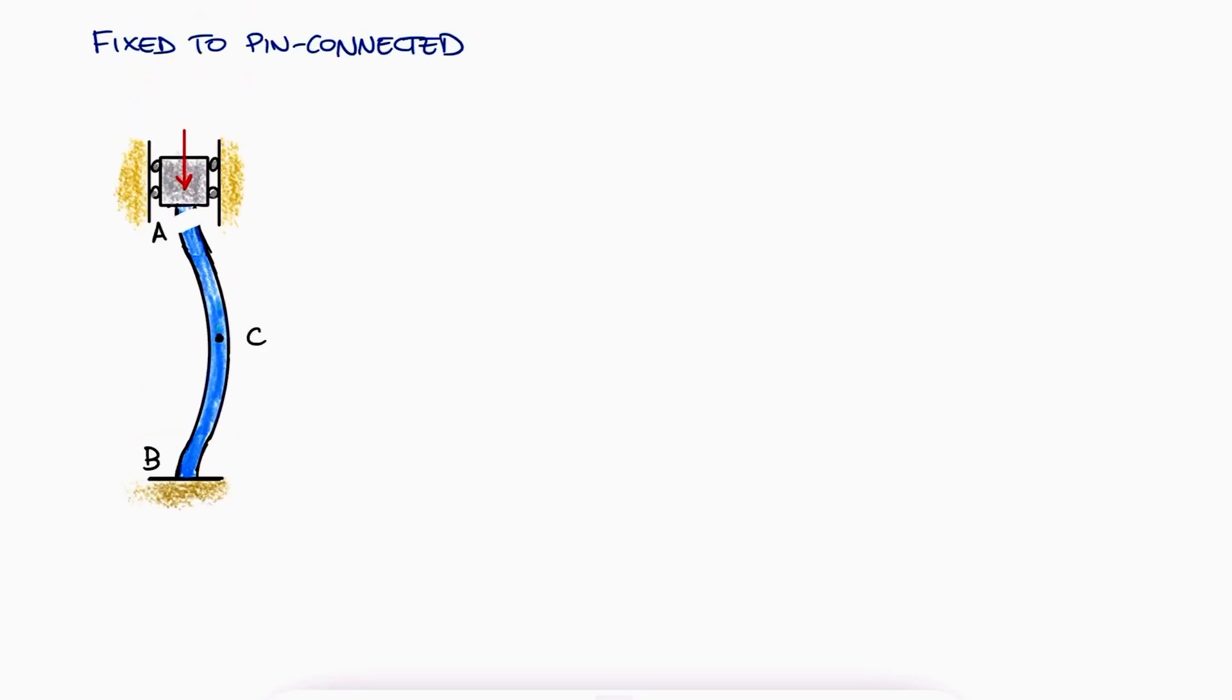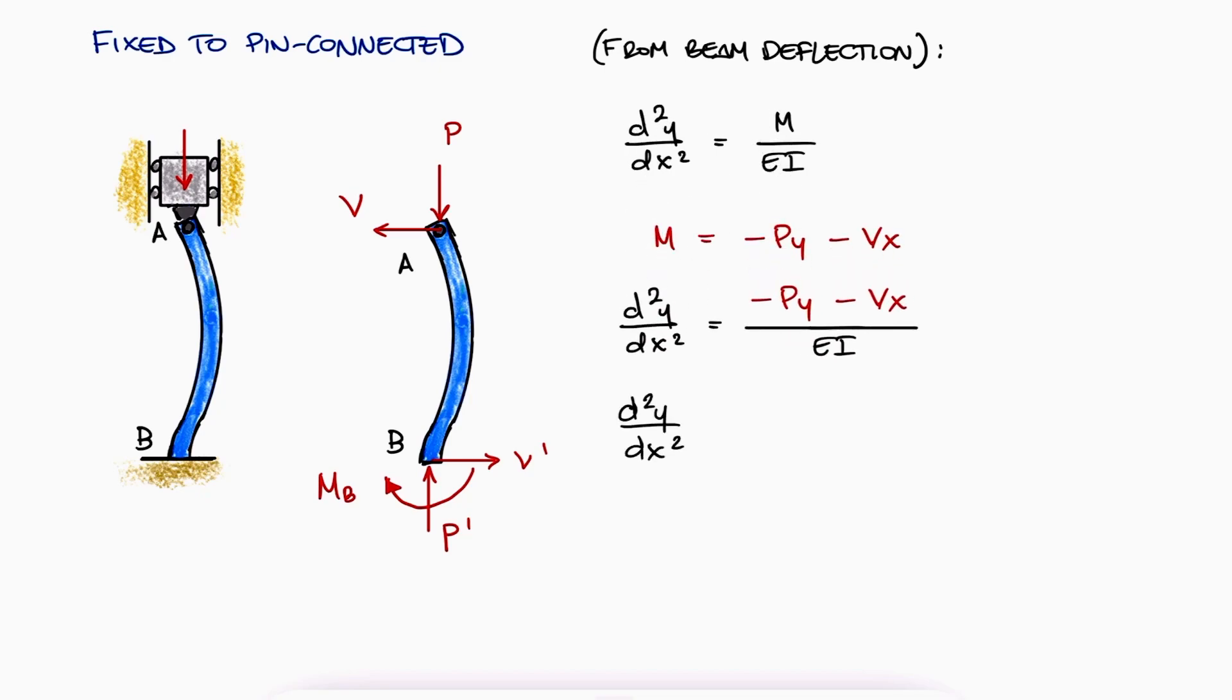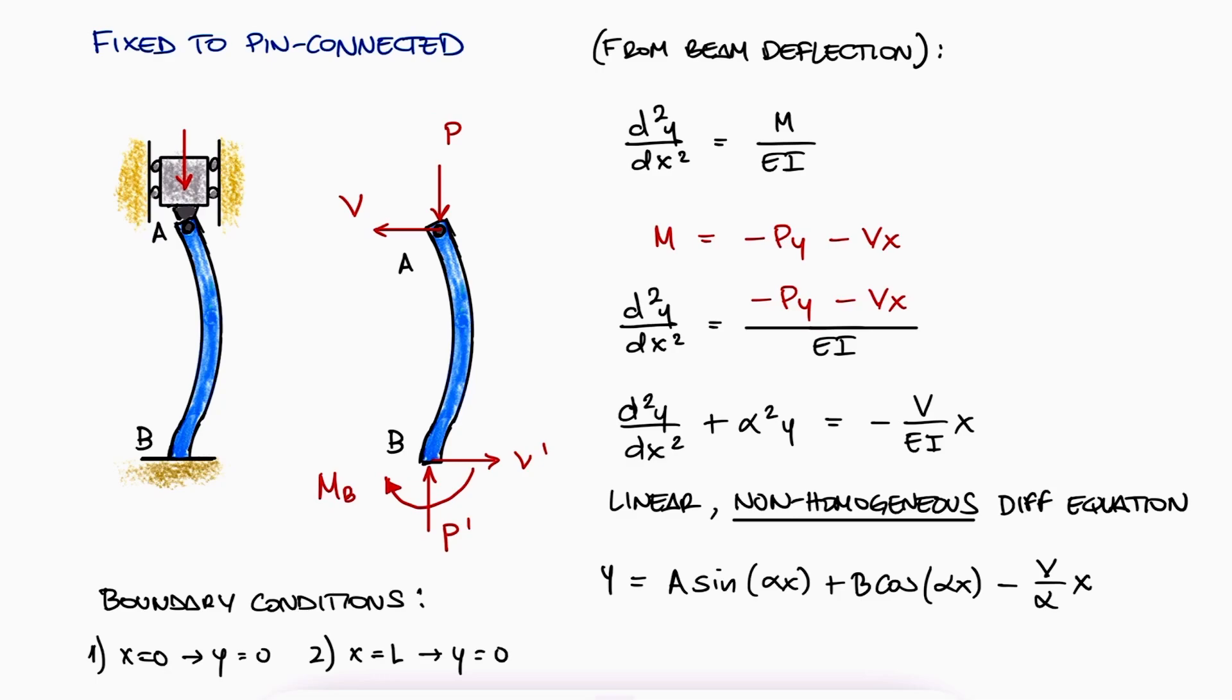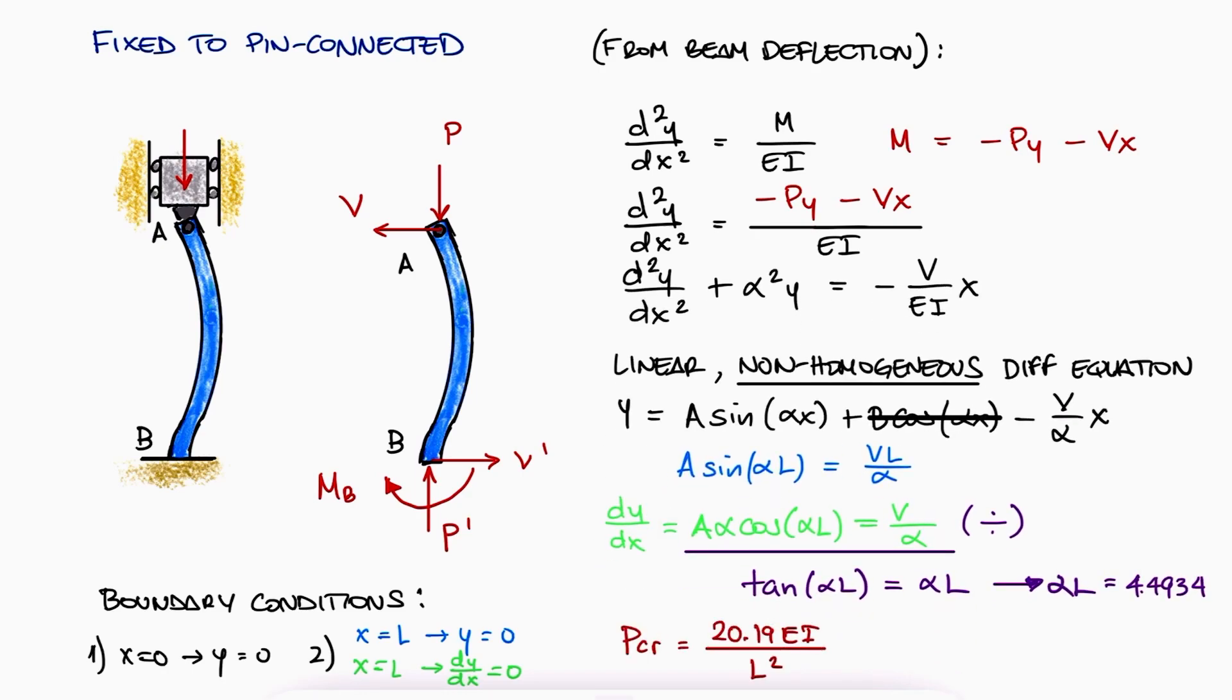A column with one fixed end B and one pin connected end A is a little more complex. The free body diagram shows that a transverse force V exists on A to counteract the moment and another on B to counteract that first V. If we write the second derivative of y expression that we used before, now substituting M with the two terms we get, and we redo the whole differential equation analysis, this time with a linear non-homogeneous differential equation, we get an expression for y that results in a critical load P expression of 20.19 EI over L squared. The equivalent length for the fixed-pin end condition is 0.699 L or just 0.7 L.